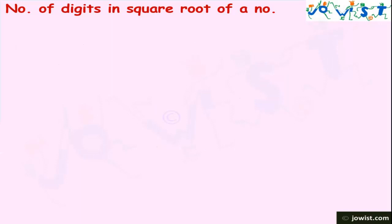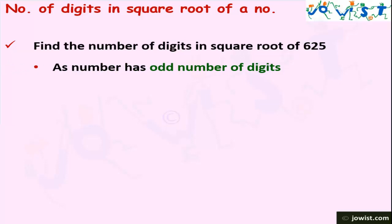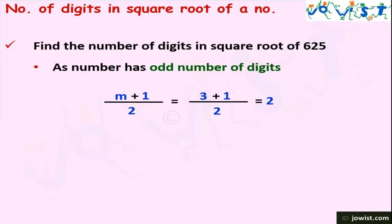Now let's find the number of digits in the square root of 625. The number 625 has 3 digits, and 3 is an odd number, so we will use the second formula: (m + 1) / 2. With m = 3, we get (3 + 1) / 2 = 2. So 625 will have 2 digits in its square root.